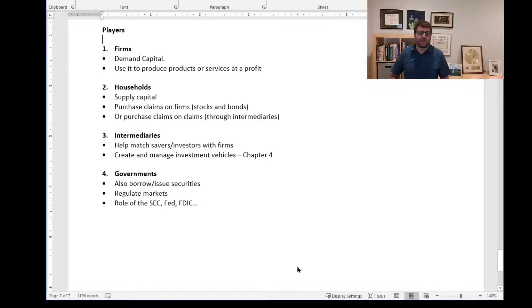Let's talk briefly about the players in the investment world. Firms demand capital and use it to produce products or services for profit. Households supply capital and purchase claims on firms—stocks and bonds—or purchase claims on claims through intermediaries like mutual funds, ETFs, and other investment vehicles.